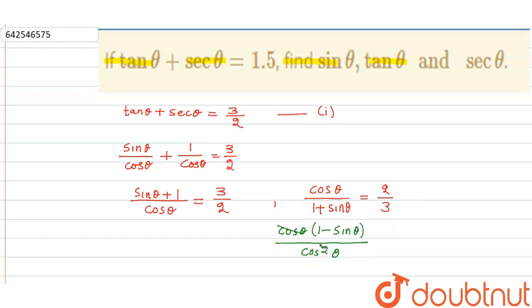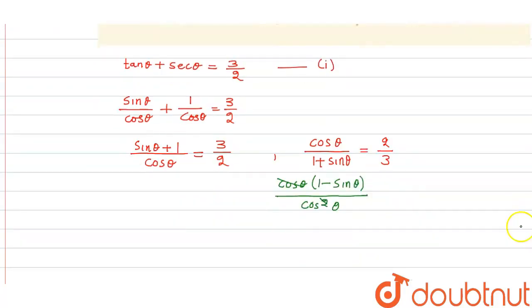So this becomes 1 upon cos θ, that means sec θ minus sin θ upon cos θ, that means tan θ. So sec θ minus tan θ is equal to 2 by 3. This is equation second.